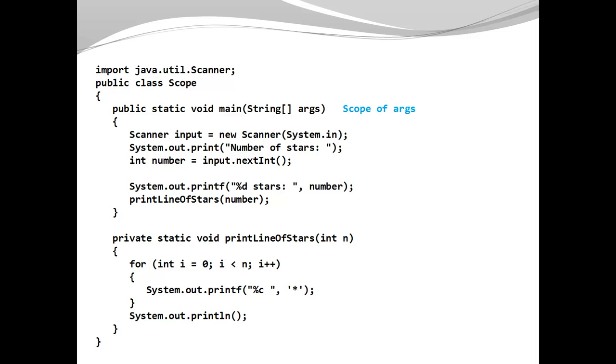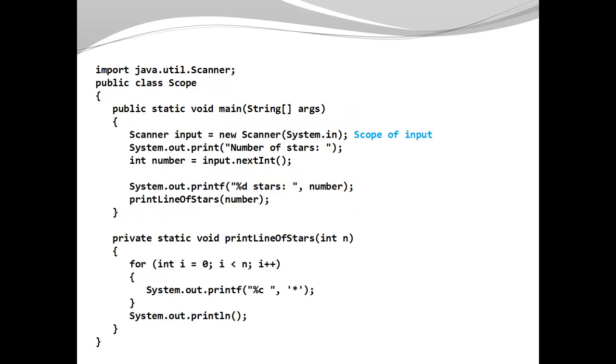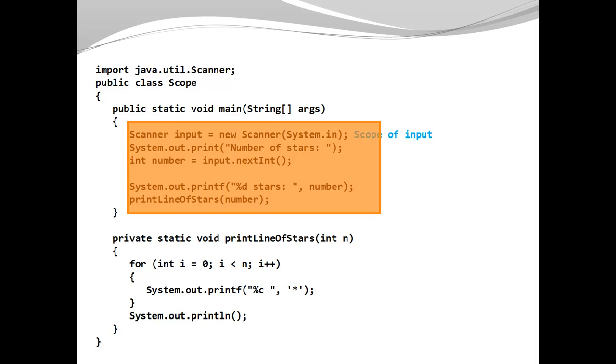Let's look at the scope of args. Args is a parameter, and we know parameters are in scope anywhere in the method. Here you can see args can be accessed anywhere within the method but only within the method. If I look at input, that is a local variable declared inside the body of main. Input is in scope from the moment it is declared all the way to the end of the code block, which is the closing curly brace. This looks exactly like the scope of args, and the reason is because my local variable input was declared as the first statement.